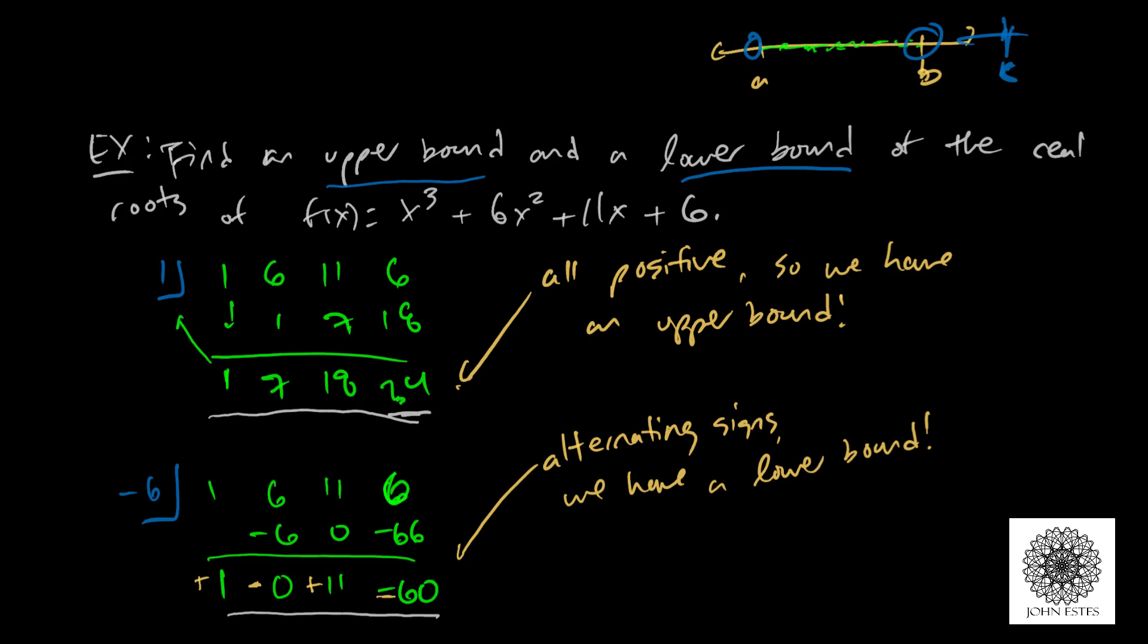So that means we have found a lower bound. In general, if your signs alternate like we did here, then that means that all your real roots are going to be bigger than that number. Now the 0, we chose it to be negative. What if it was supposed to be positive?